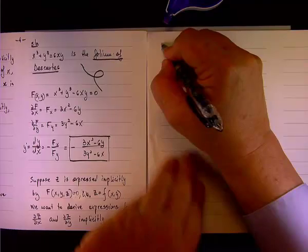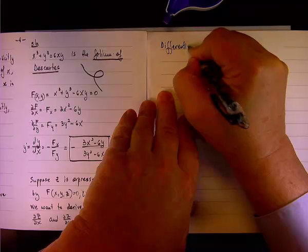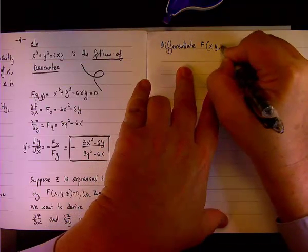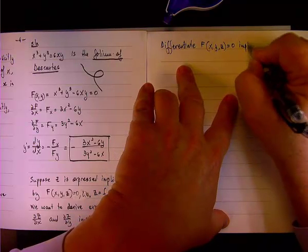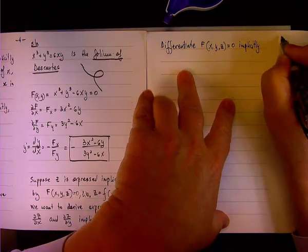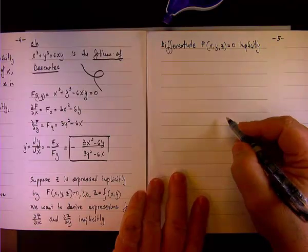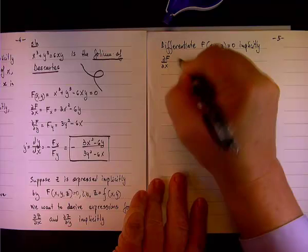So, we accomplish that by differentiate F(x,y,z) equals zero implicitly, the same way that we did with the two-variable case. Okay, so, what do we end up having?